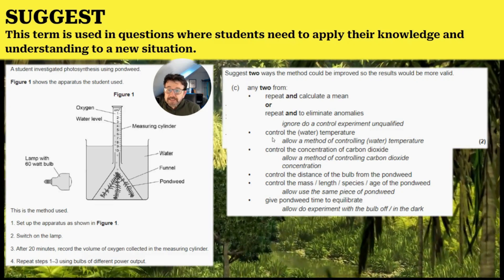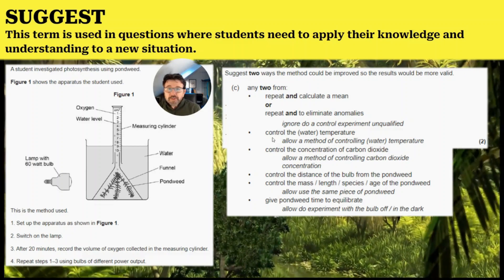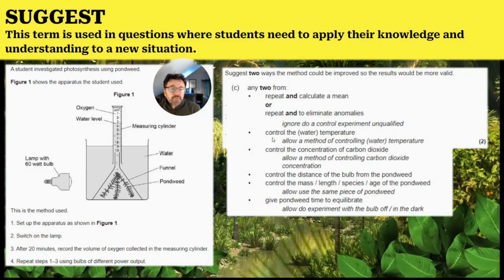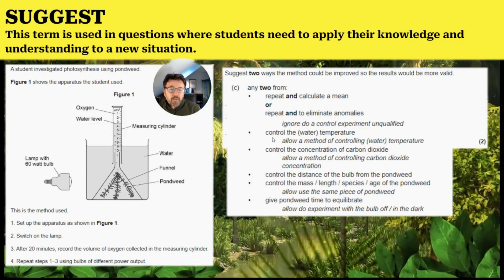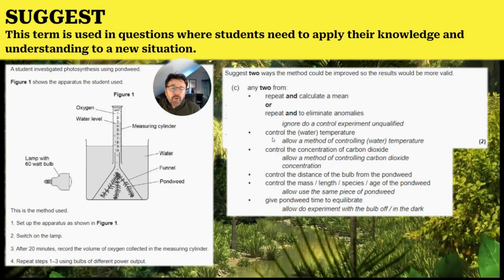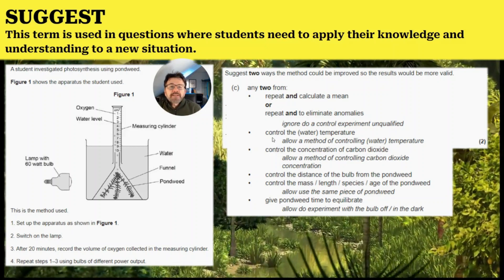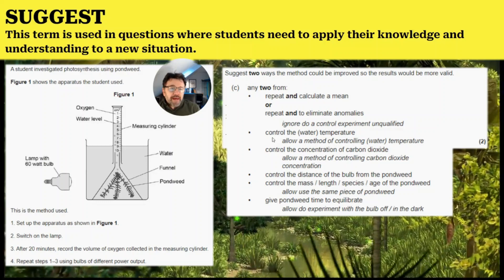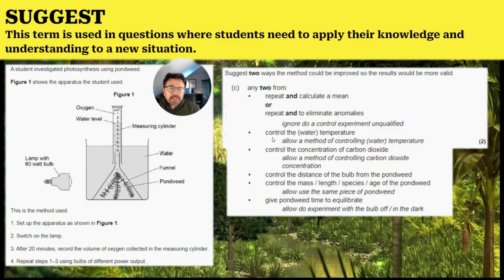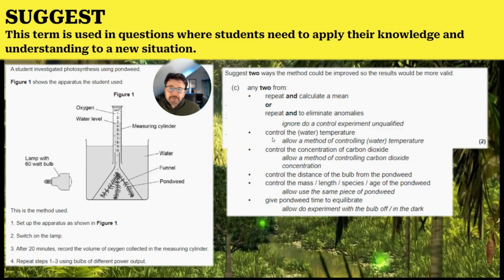Control the distance of the bulb from the pond weed, because they don't show the ruler being used. Control the mass, length, species, or age of the pond weed. And finally, give the pond weed time to equilibrate. As you can see, there's more than two answers, and you would probably know those answers from doing the actual required practical.